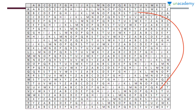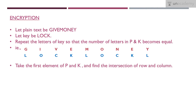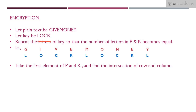This table is used in the encryption method to find the cipher text. Let's get straight into an example. Let my plain text be 'give money' — this is the message I want to encrypt and send securely to a friend. We need a key here. My key is 'lock' — L, O, C, K. Your key can be anything of your choice.